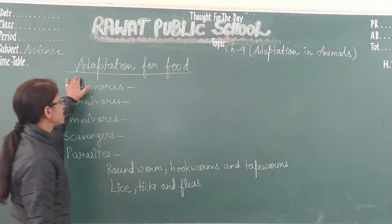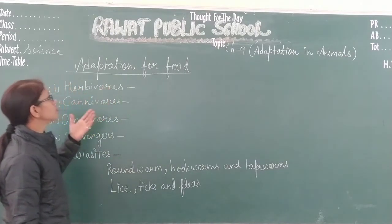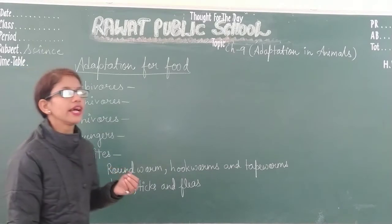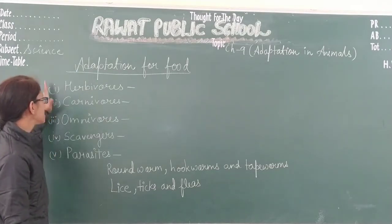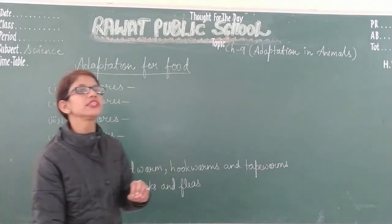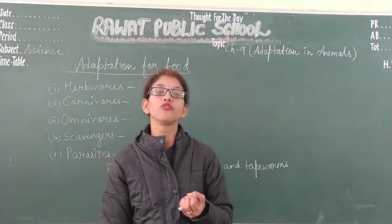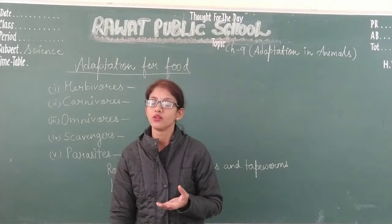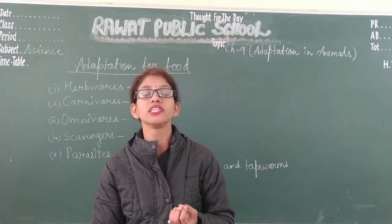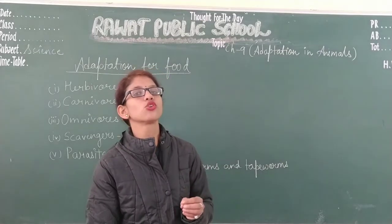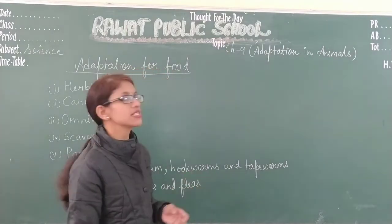Today we will discuss adaptation for food — how animals adjust and adapt themselves for food. Animals are categorized into 5 main categories according to the availability of food. If all animals ate the same type of food, there would be a scarcity of food. That is why there is segregation of food for different animals, with different feeding habits followed by different animals.